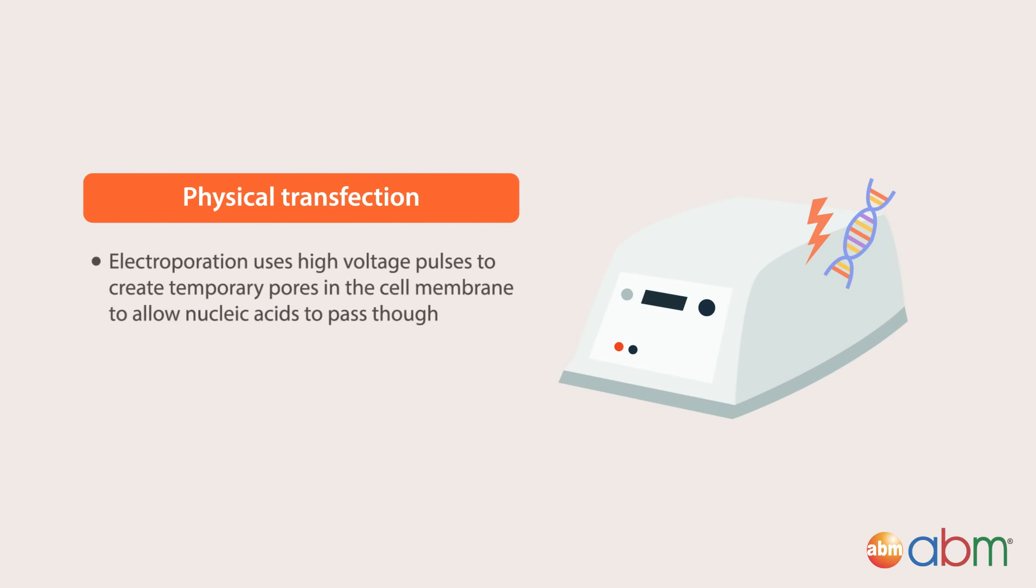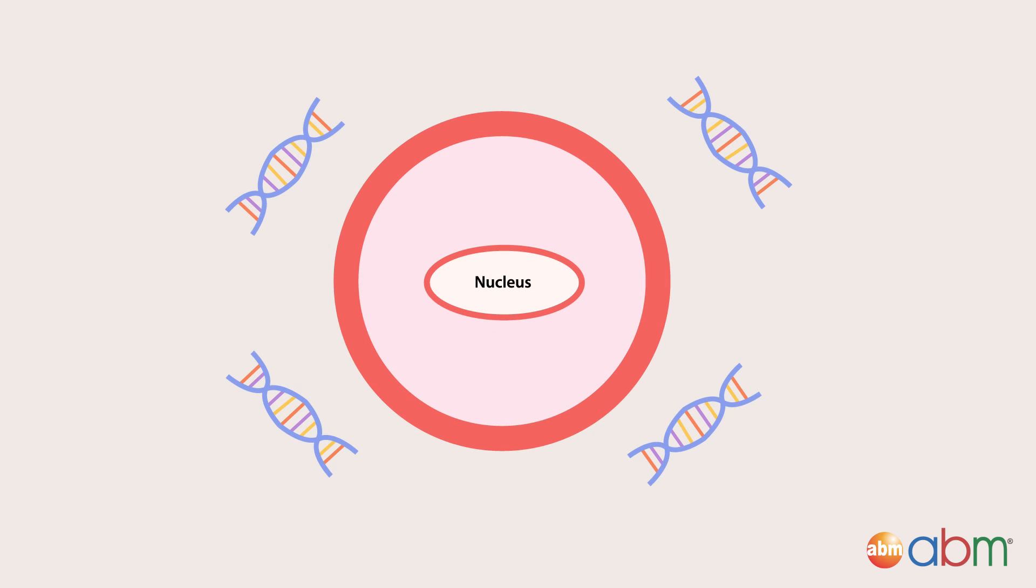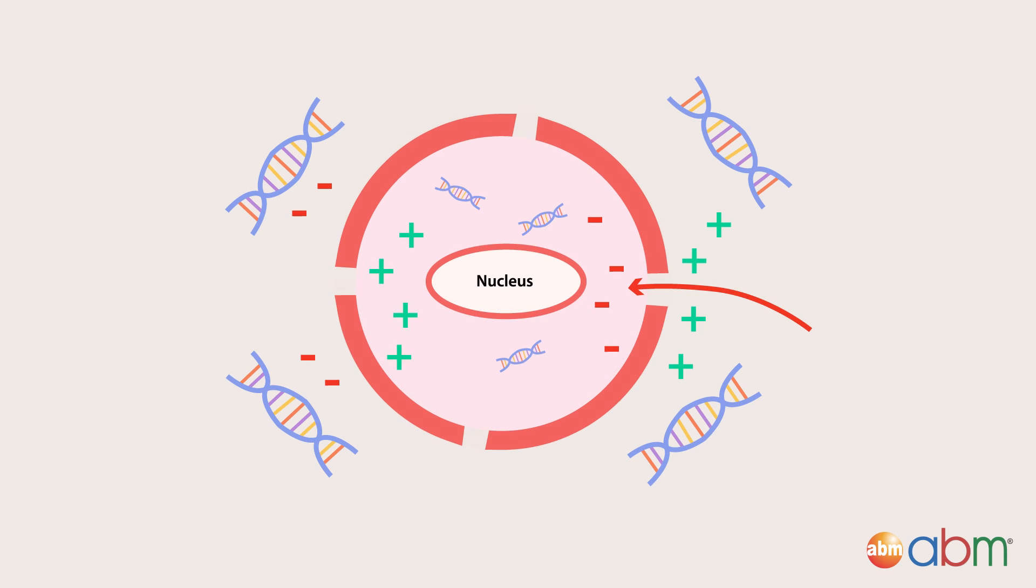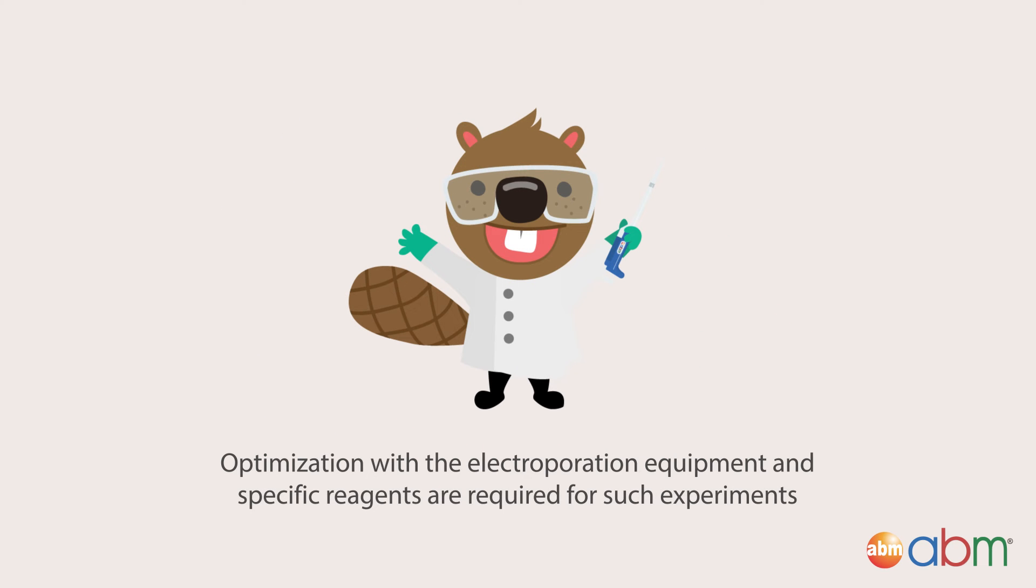Physical transfection: electroporation uses high voltage pulses to create temporary pores in the cell membrane to allow nucleic acids to pass through. It is a rapid technique which can be applied to both adherent and suspension cells with high efficiency. Once an optimal condition is determined, this method yields a higher frequency of stable cells as nucleic acids can enter the nucleus to integrate into the host genome. Optimization with the electroporation equipment and specific reagents are required for such experiments.